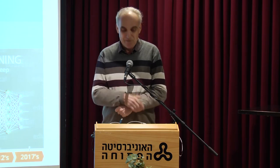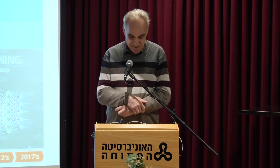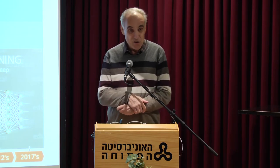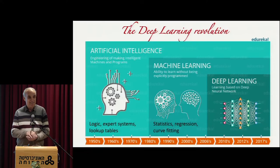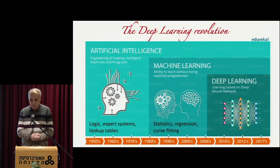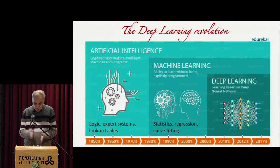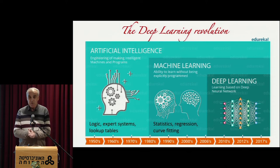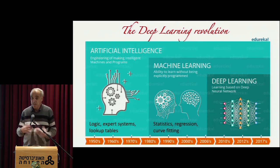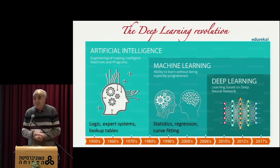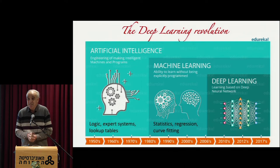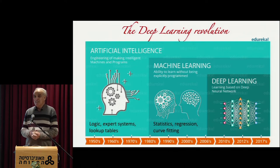If it started from in the 50s and 60s with logic-based systems motivated by Turing mostly, and then moved in the 80s to what we call statistical learning theory and physical learning, which is essentially curve-fitting and using statistical models.